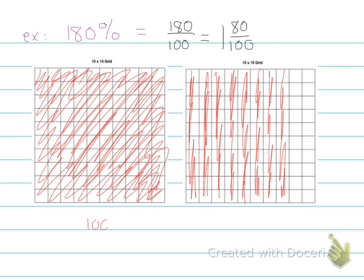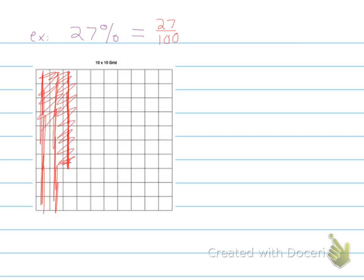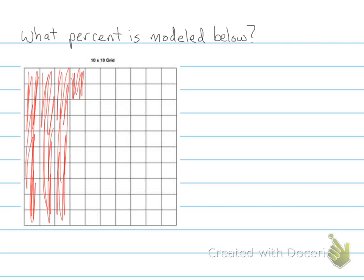Another example of how to model a percent: we have 27 percent. 27 percent means 27 over 100. You have a hundred grid again, so 27 of those squares would be colored. So there's 10, 20, 21, 22, 23, 24, 25, 26, and 27. That is modeling 27 percent.